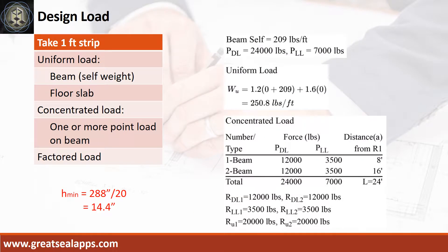The beam carries two concentrated loads each with dead load of 12,000 pounds and live load of 3,500 pounds, one 8 feet away from left support, the other 8 feet away from right support. The beam self-weight is 209 pounds per foot for a factored uniform load of 250.8 pounds per foot.